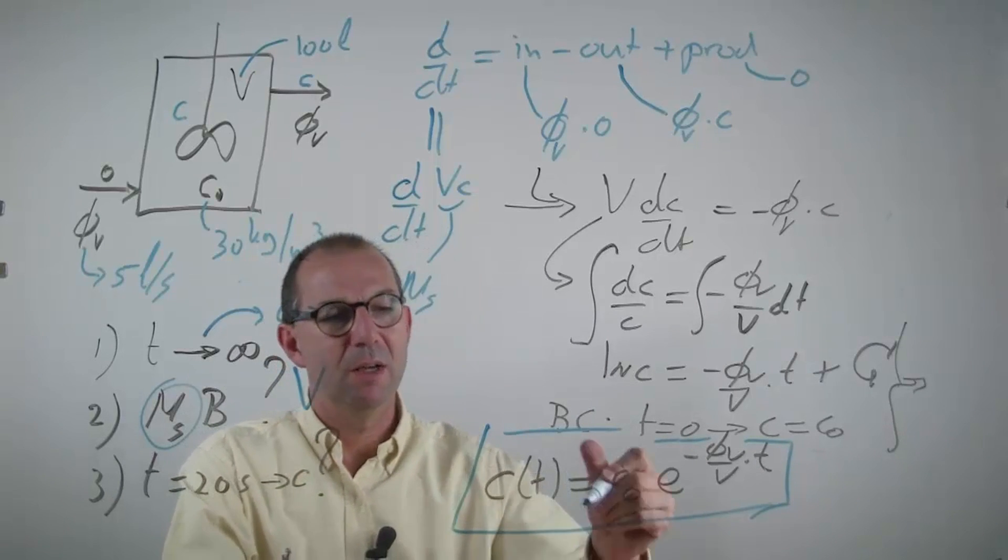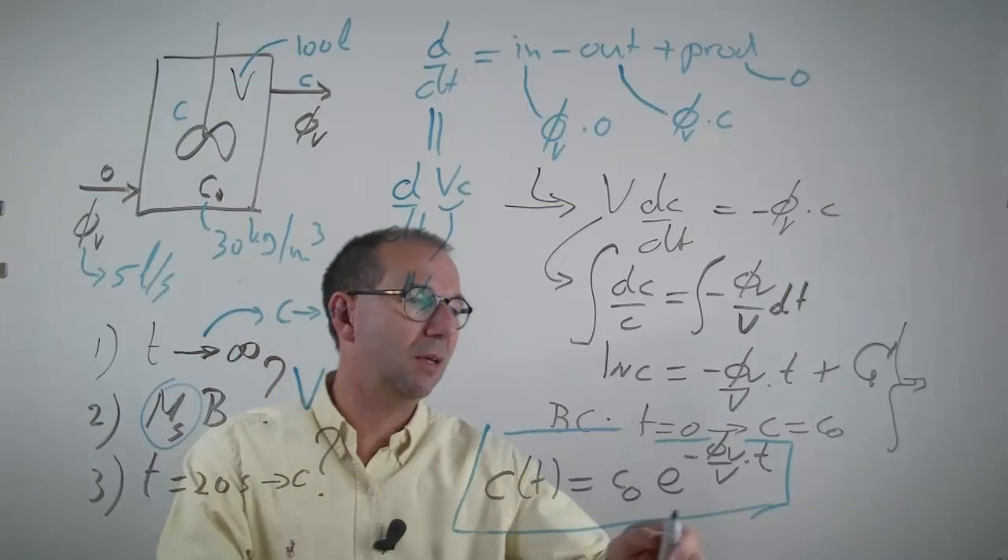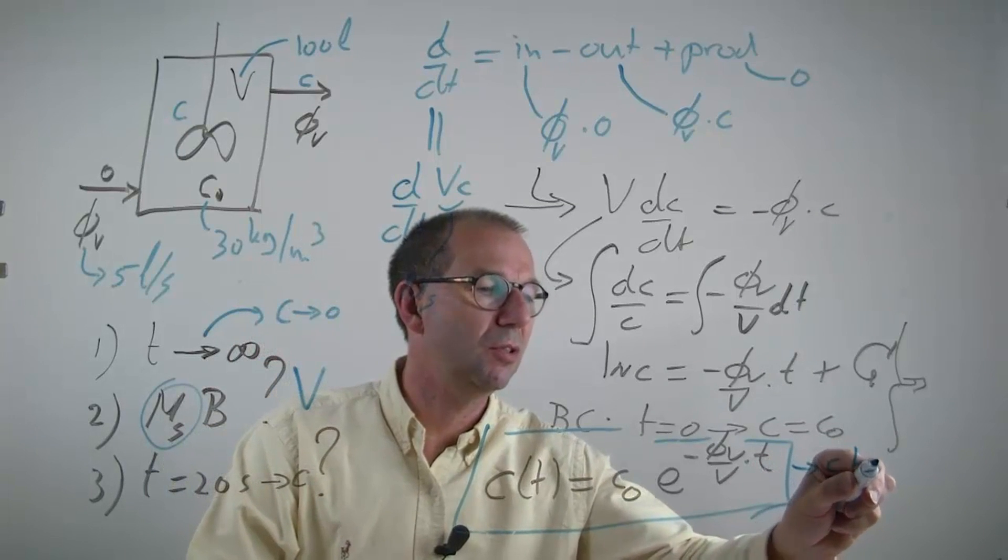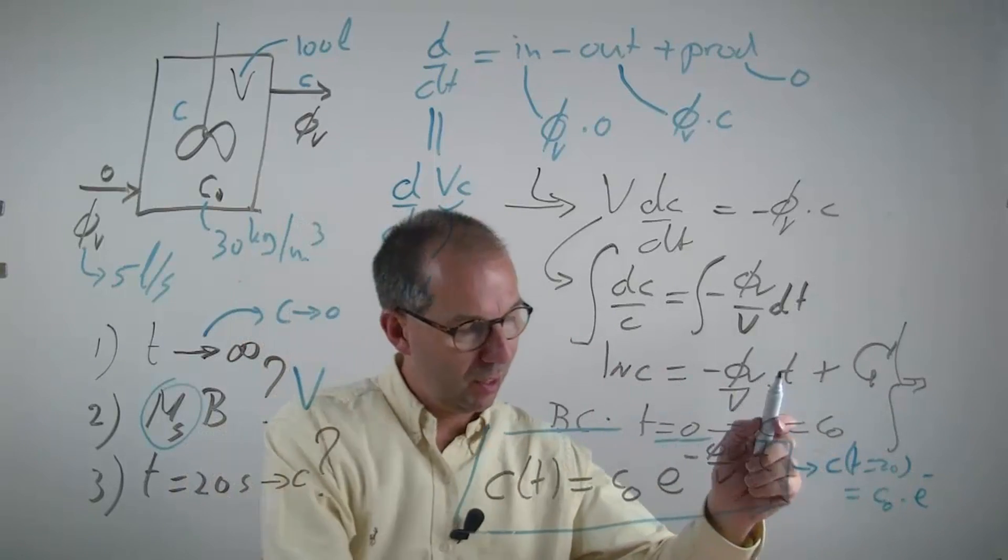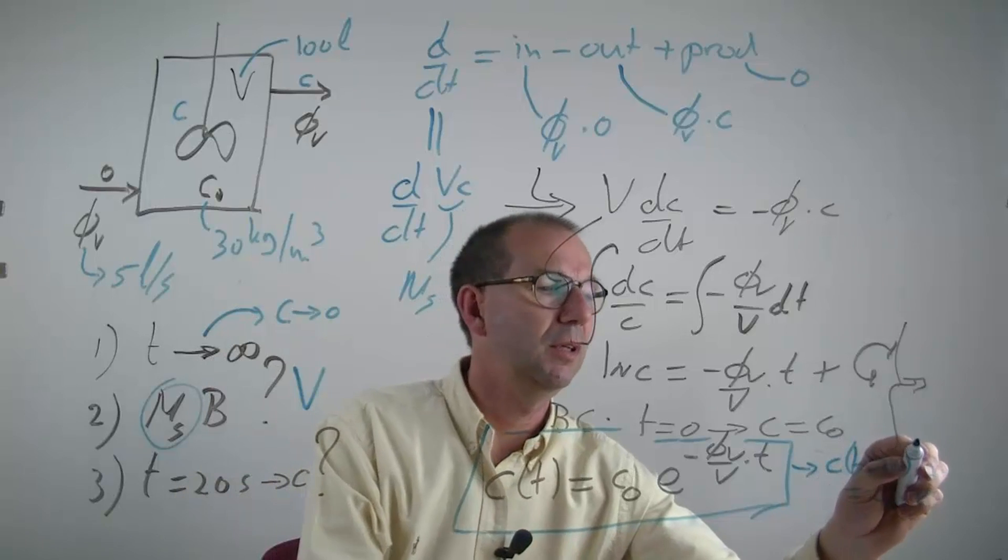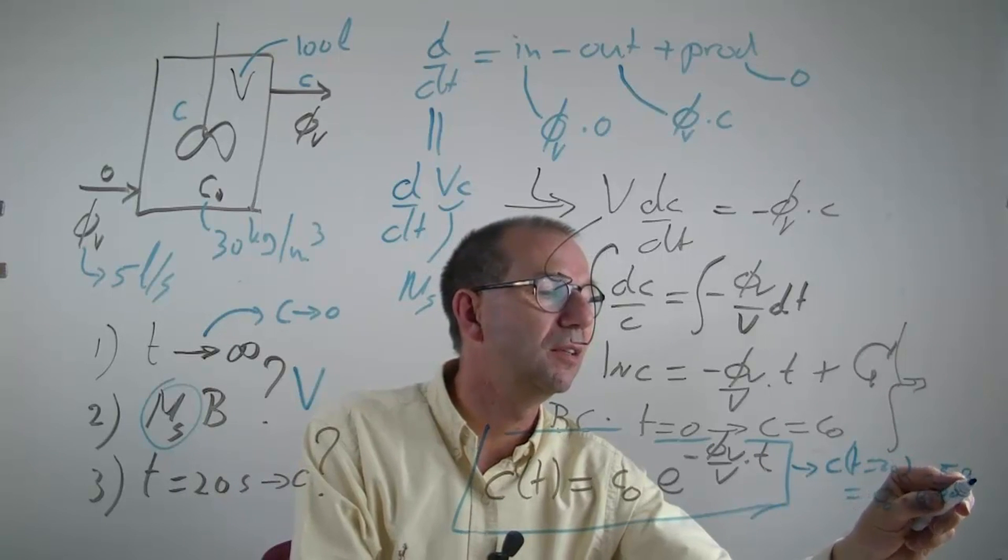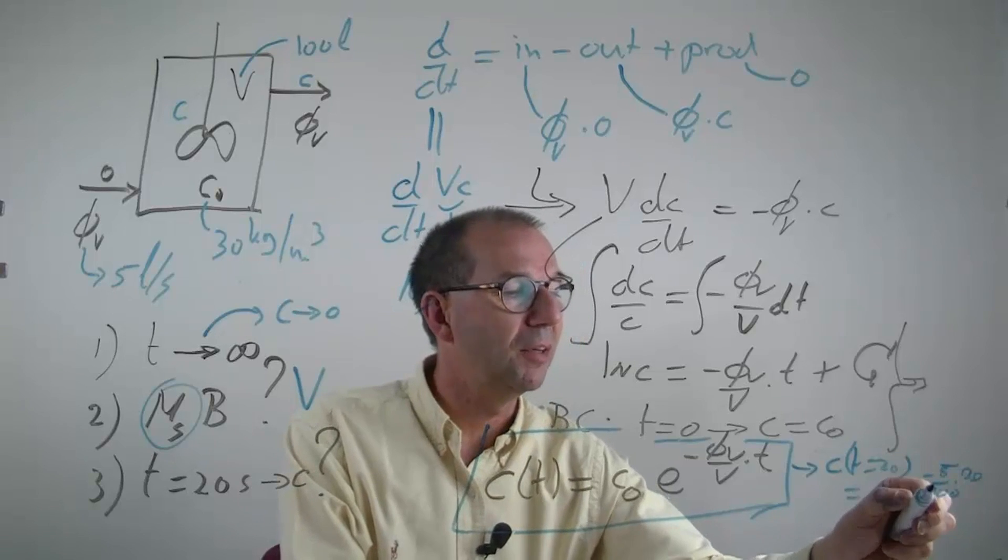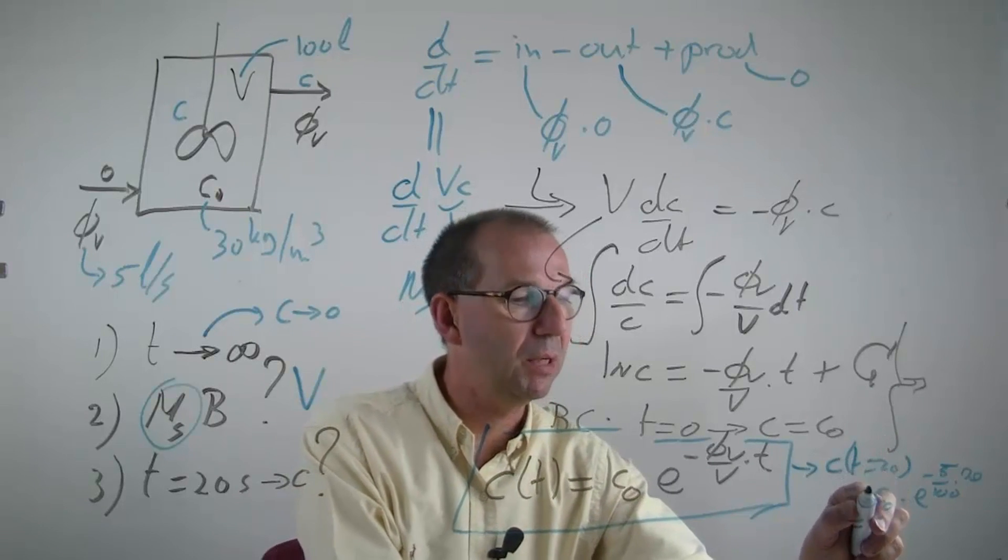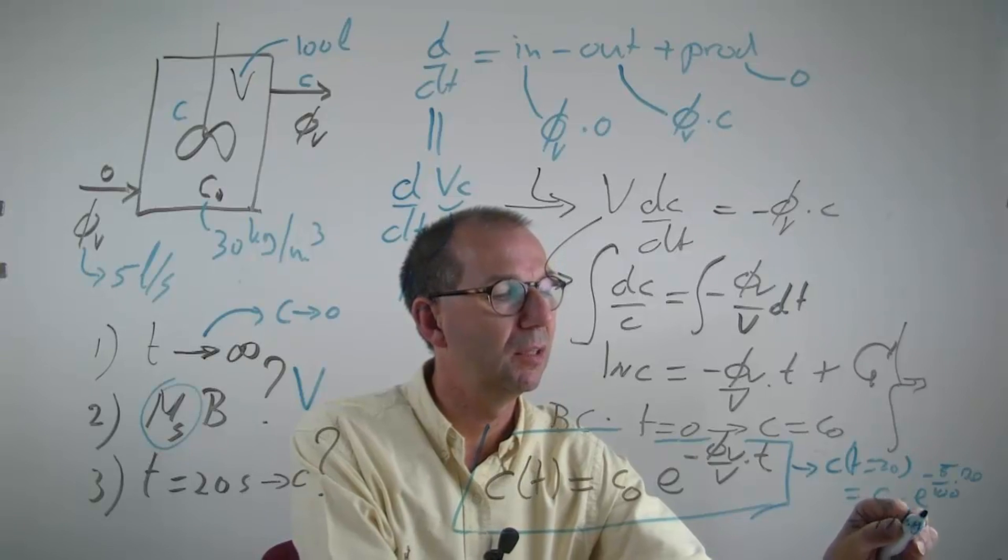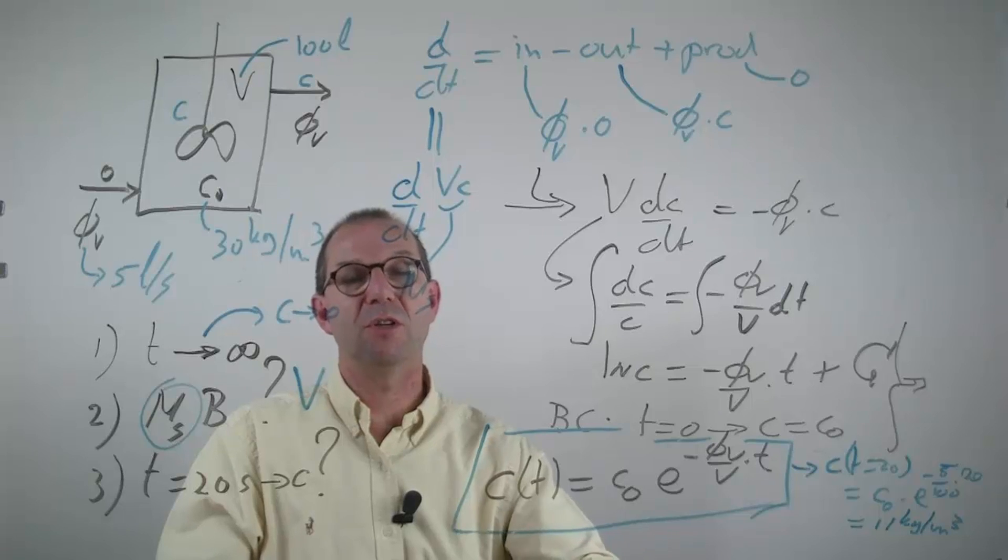I trust that we have a good solution. Then I can compute C at t equals 20 seconds equals C0 times the exponent of minus 5 liters per second over 100 liters of the tank times 20. Oh, this is minus 1. Then C0 times e to the power minus 1 is 11 kg per cube. This is just an illustration. Once you have this general formula, obviously you can find at any time what the concentration of salt in the tank is.